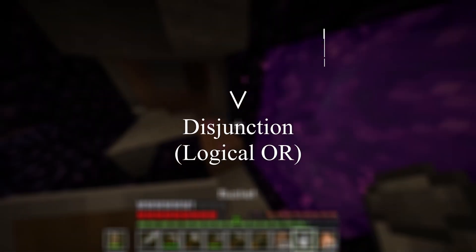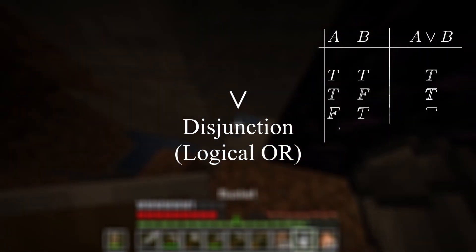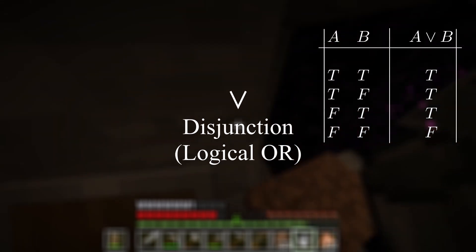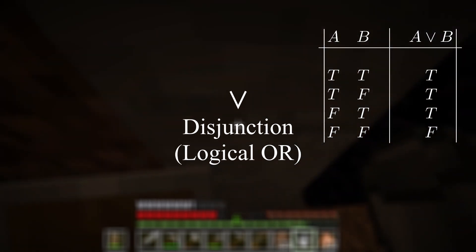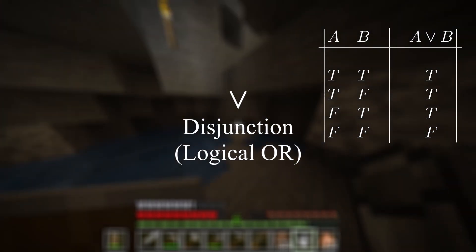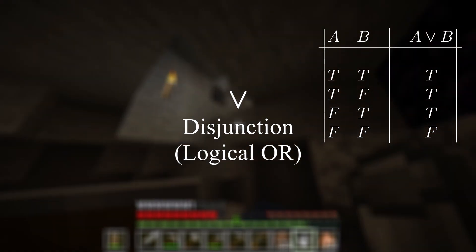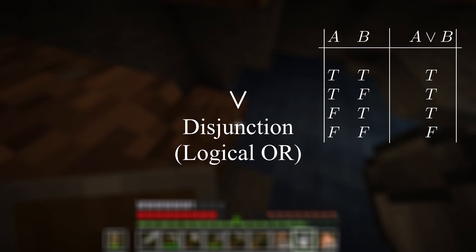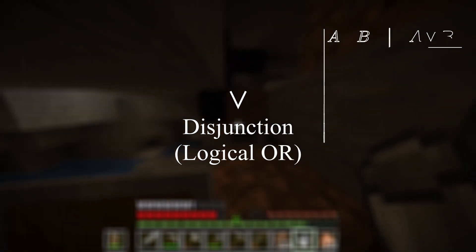The logical disjunction is basically an OR statement. If at least one of the statements is true, then the disjunction is true. If they're both false, it's false — so it's kind of like an either/or scenario, but you can have both.